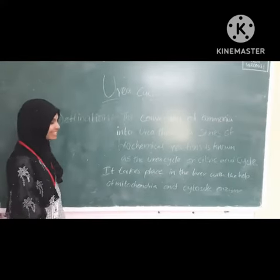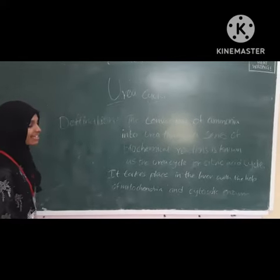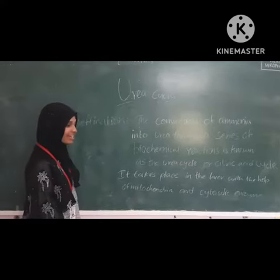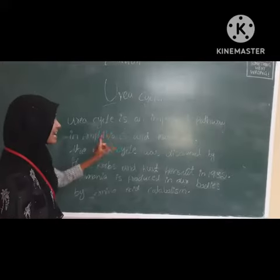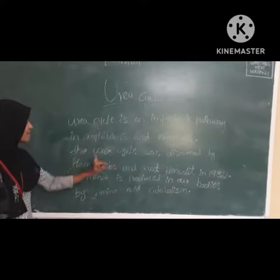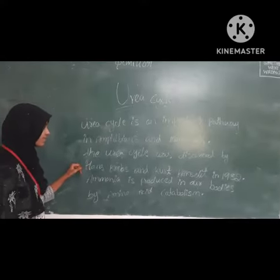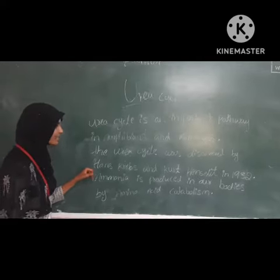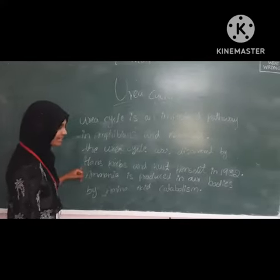The Urea Cycle is also called the citric acid cycle. It is expressed in the mitochondria and cytosolic energy. It is an important pathway. The Urea Cycle was first described by Krebs and Henseleit for treatment in 1932.